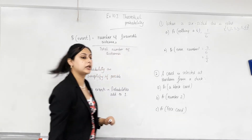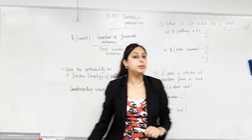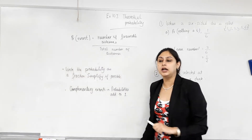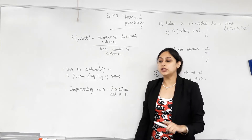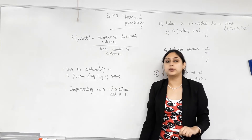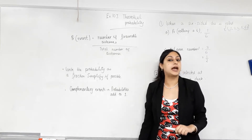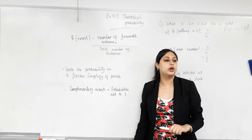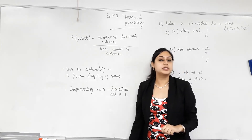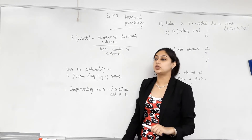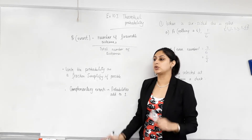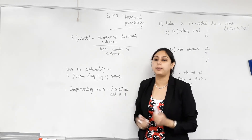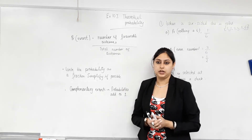Complementary events are the events for whom the probabilities add up to one. Or in simple terms, they are the only two possible outcomes, so one of them will happen.